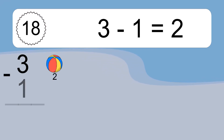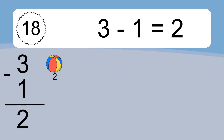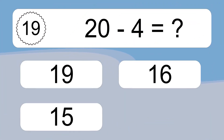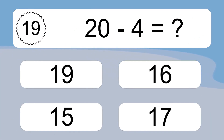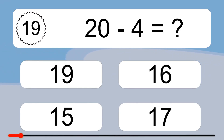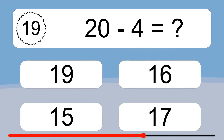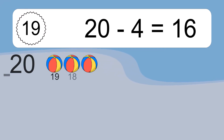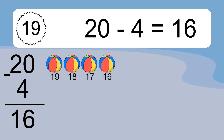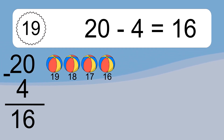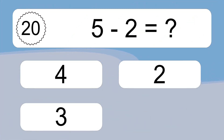3 minus 1 equals what? 3 minus 1 equals 2. 20 minus 4 equals what? 20 minus 4 equals 16. Let's count it: 19, 18, 17, 16.